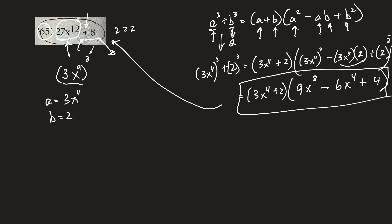If you wanted to test it, feel free just to take this times this. That'd be 27x to the 12th. This times this, minus 18x to the 8th. This times this, plus 12x to the 4th. I'm getting a little worried.